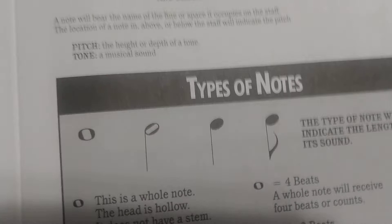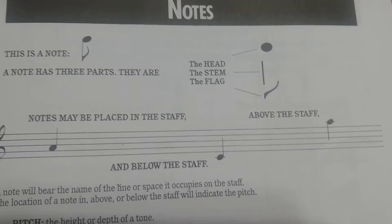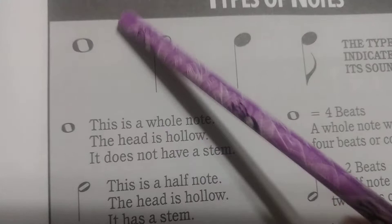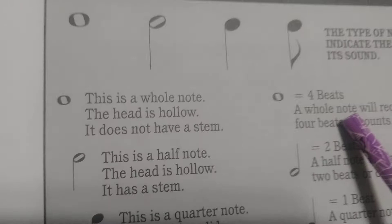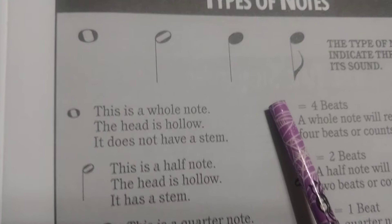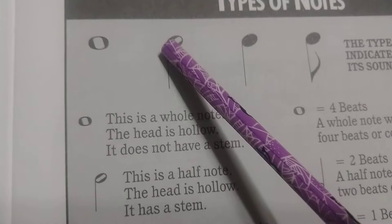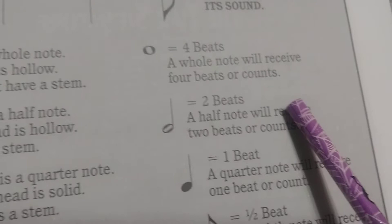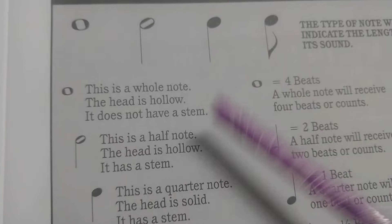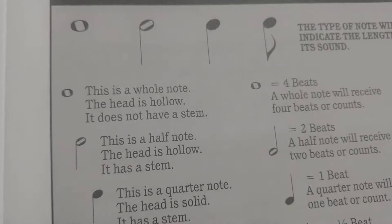The next page is going to be about types of notes. Types of notes are very important because they tell us how long we hold our notes out for. When we see a whole note, which is just a circle, it's going to have us hold our note for four beats of time — our note will ring for four beats and we want to make sure we sustain it. The next type of note is a half note, which is hollow and has a stem. The half note is going to have two beats.